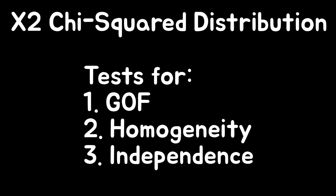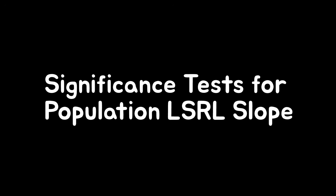Chapter twelve is the last chapter and brings chi-squared distribution into the question: tests for goodness of fit, homogeneity, or independence, and then significance tests for population regression line slope.